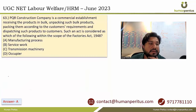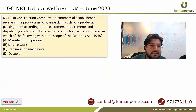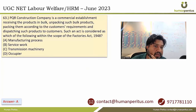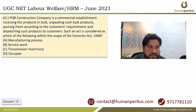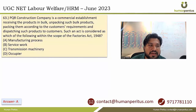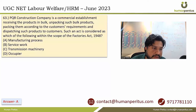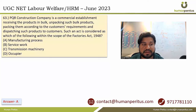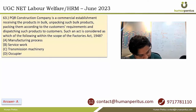A construction company is a commercial establishment that receives products in bulk, unpacks them, packs them according to customer requirements, and dispatches them to customers. Such an act is considered within the scope of the Factories Act as a manufacturing process. The correct answer is option A.